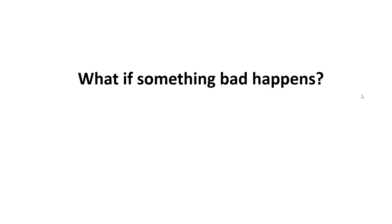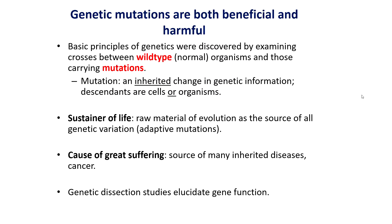So what if something bad does happen? Typically we refer to these as mutations, and most mutations are bad and cause harm to the cell. Very occasionally there are some mutations that are beneficial to the organism from an evolution and adaptation point of view. The basic principles of genetics were discovered by examining crosses between wild-type organisms and those that carry mutations, which allowed us to understand not only how mutations are inherited, but also the effect of those mutations on phenotype — how it changes the organism visually.